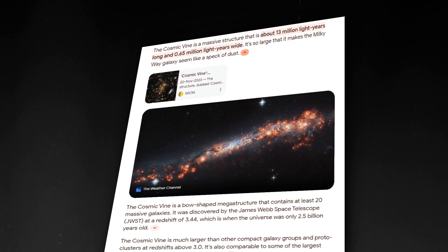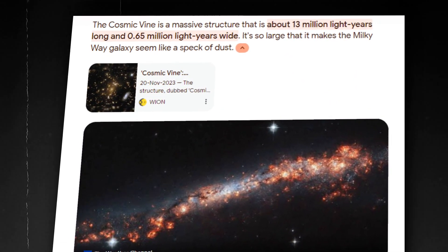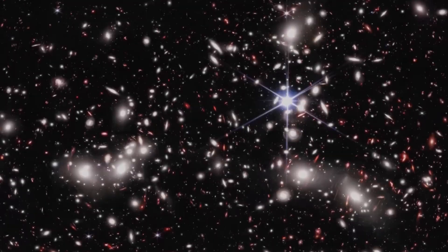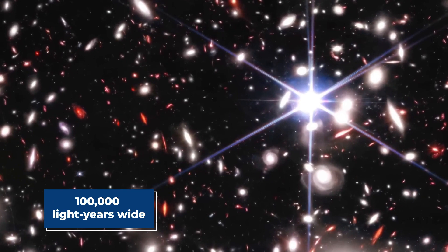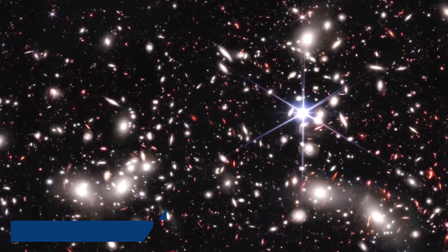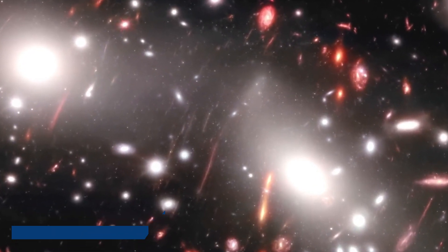It's shaped in a bow, estimated to stretch more than 13 million light years long, and about 650,000 light years wide. As we know, the Milky Way is about 100,000 light years wide, but this dense structure is 650,000 years wide, making it such a giant we never knew existed so far from Earth.